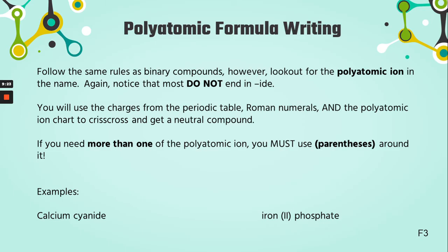Now let's talk about writing the formulas. It's going to be the same rules again. The only difference is that we are going to be on the lookout for polyatomic ions. How do we know there's a polyatomic ion? Well, there are clues — most of them don't end in -IDE. So if we see a name ending in something else, we better flip over our periodic table. Of course there are those couple of exceptions, but you only have to know the three. We're still going to use charges from the periodic table, Roman numerals if it's somebody in the middle, and still crisscross using the charges right off the chart.